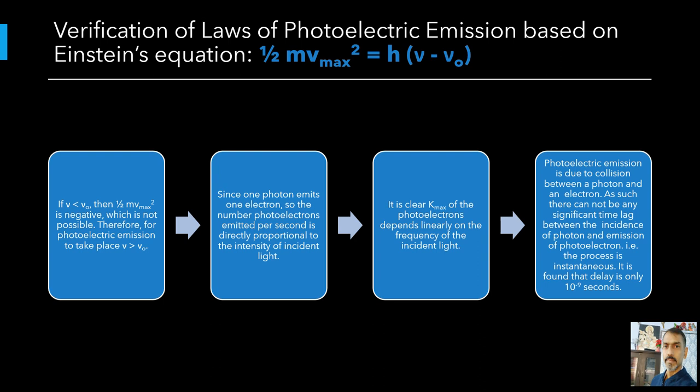In this picture, intensity of radiation is proportional to the number of energy quanta per unit area per unit time. The greater the number of energy quanta available, the greater is the number of electrons absorbing the energy quanta, and greater therefore is the number of electrons coming out of the metal for nu greater than nu nought.